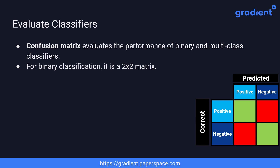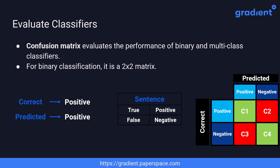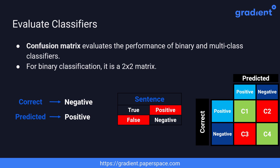We are left with a matrix with four cells, each having a two-word label. The first word is 'true' if the classification is correct — meaning the predicted and correct labels are the same — and 'false' otherwise. The second word is 'positive' or 'negative' depending on the predicted class. For example, if the correct label is positive and the predicted label is positive, the cell is 'true positive.' If the correct label is negative and the predicted label is positive, it is 'false positive.'